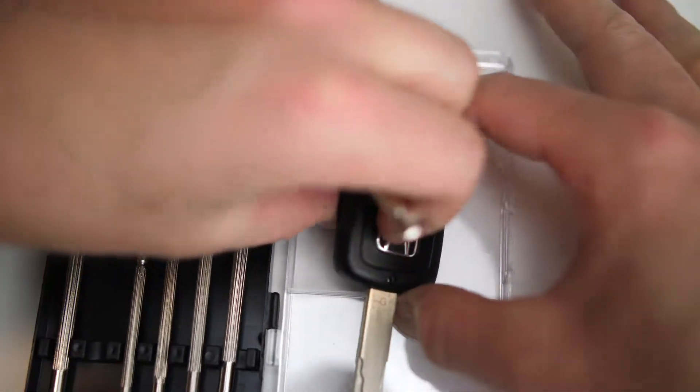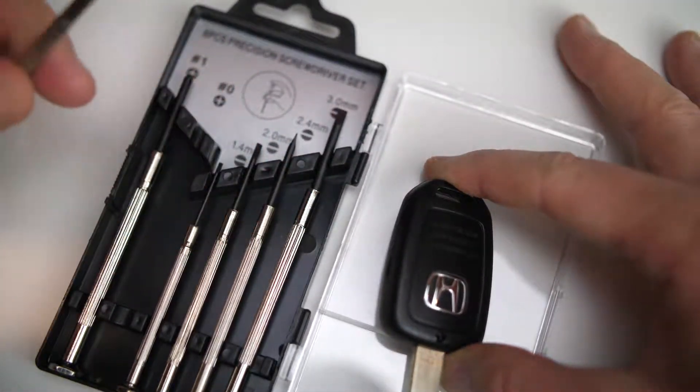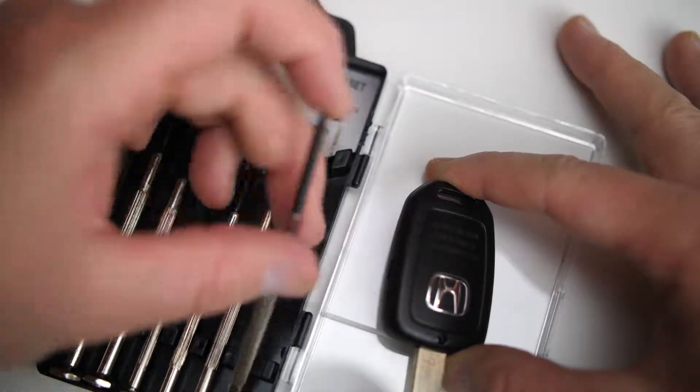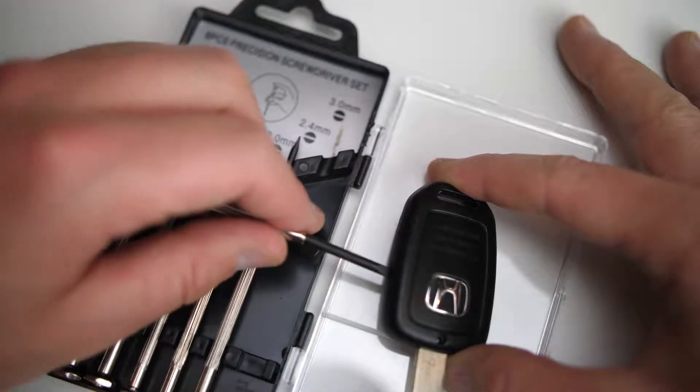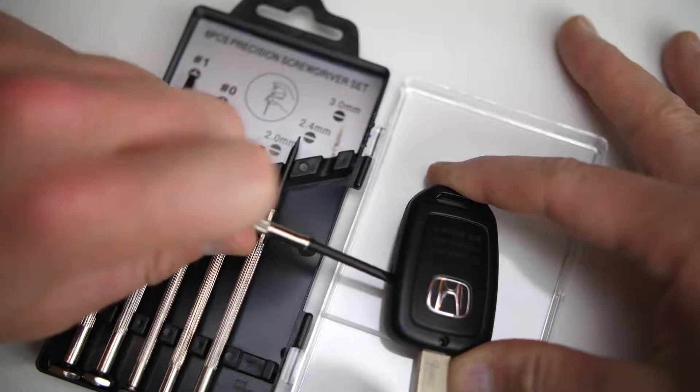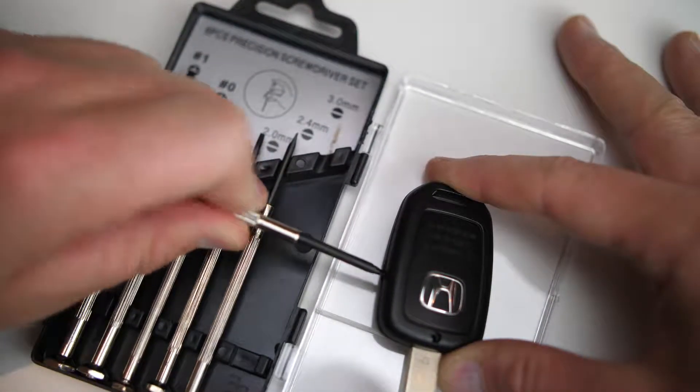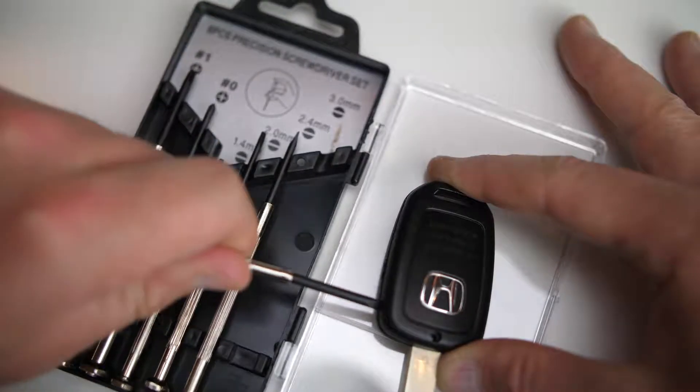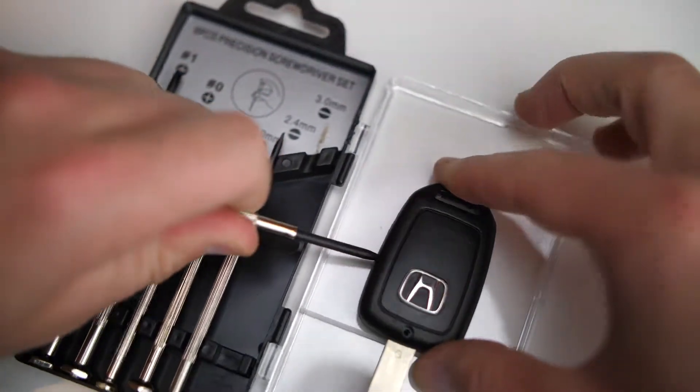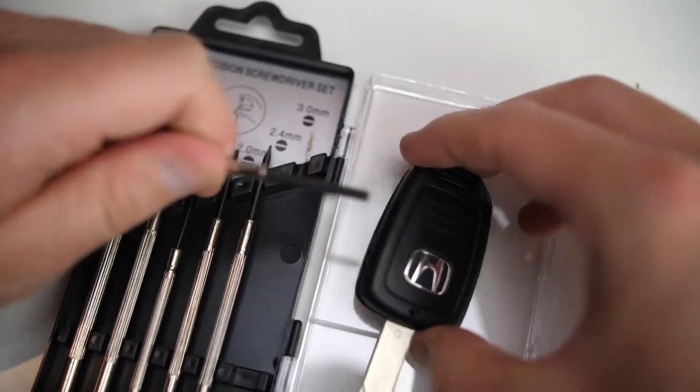Once you've got the screw out, if you look on the side, there's a small notch. Go ahead and take a small flathead screwdriver into that notch. They put that there so you can get some leverage to be able to pop off the back of this key fob. Get in there and you may have to go around a little bit, but this will snap right off.